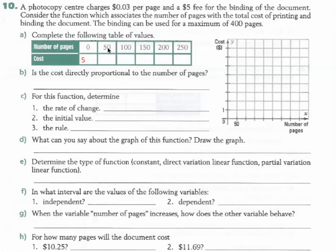And then for 50 pages, 3 cents times 50 pages is $1.50 plus the 5 is $6.50. 100 times the 3 cents is 3 plus 5 is 8, and so on. So you just do that in each case.